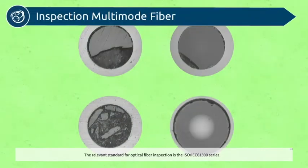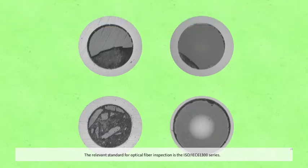The relevant standard for optical fiber inspection is the ISO IEC 61300 series. For typical campus and building installations, the inspection of fiber connectors is easy to do using a fiber microscope.